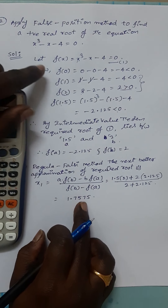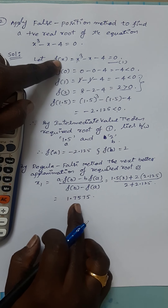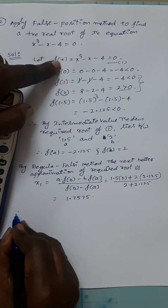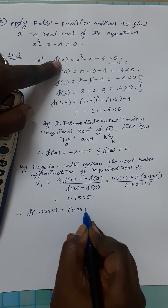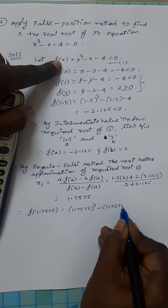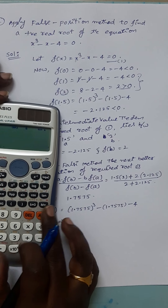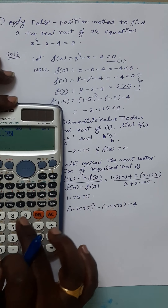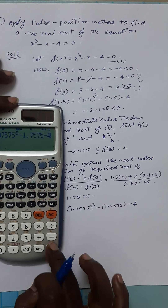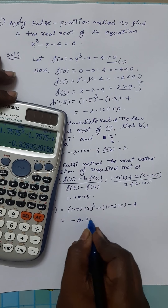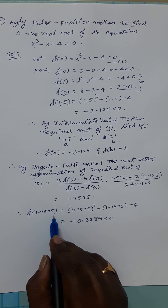Now we substitute x1 = 1.7575 in the given equation. If it equals 0, then 1.7575 is the required root and the problem is complete. So calculate f(1.7575) = (1.7575)³ - 1.7575 - 4. Using the scientific calculator, we get -0.3289, which is negative. This is not exactly 0, so 1.7575 is not the root.